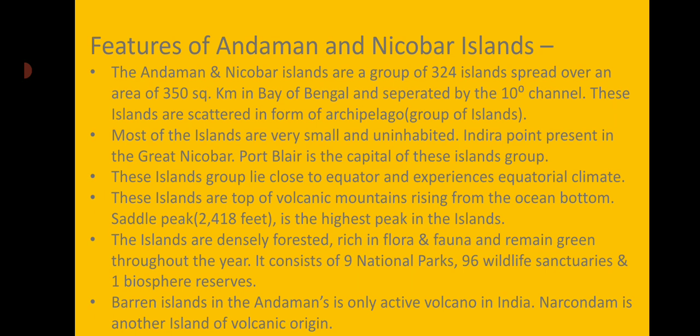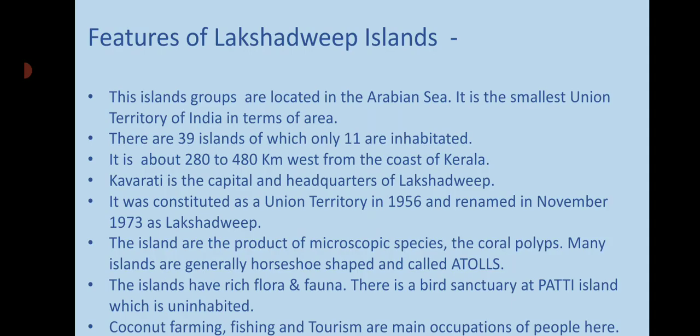These islands are tops of volcanic mountains rising from the ocean bottom. Saddle Peak, having a height of 2,418 feet, is the highest peak in the islands. The islands are densely forested, rich in flora and fauna, and remain green throughout the year. They consist of nine national parks, 96 wildlife sanctuaries, and one biosphere reserve. Barren Island in the Andaman is the only active volcano in India, and Narcondam is another island of volcanic origin.